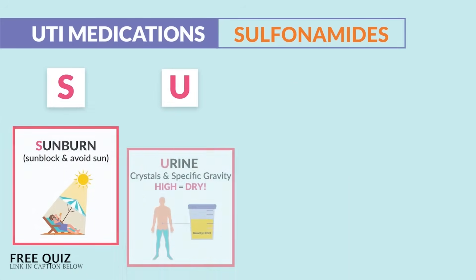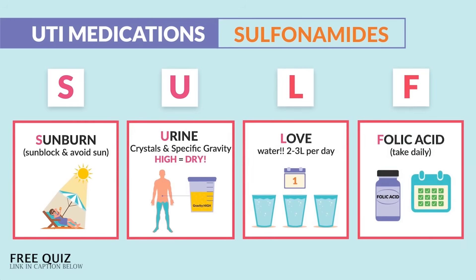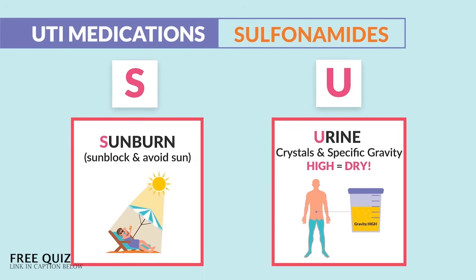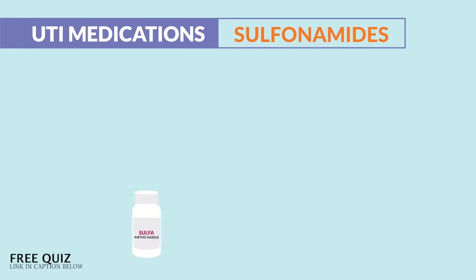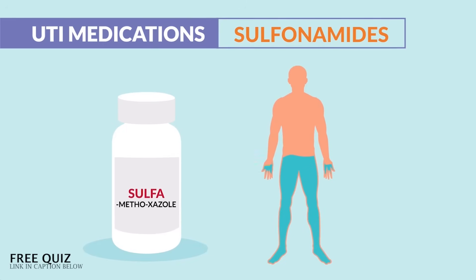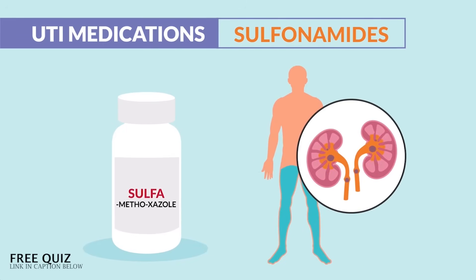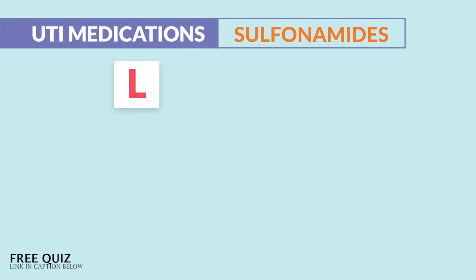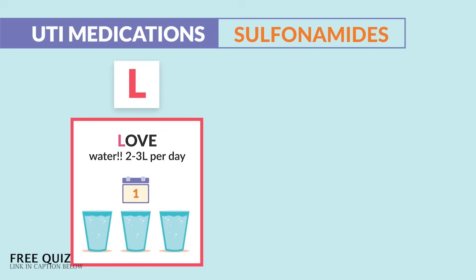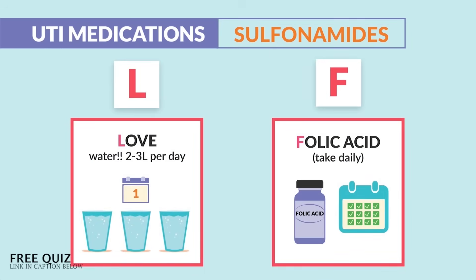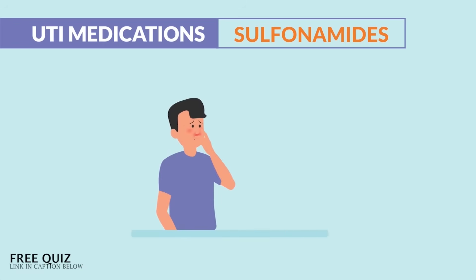The word 'sulfa' is in the drug name, making it a sulfa drug. Use the acronym SULF: S is for sunburn — teach patients to use sunblock and avoid the sun. U is for urine crystals and high specific gravity, meaning the body is dry, since sulfas dry out the body and can create urine crystals, also known as kidney stones. L is for love the water — always drink 2–3 liters per day. F is for folic acid — must take daily.